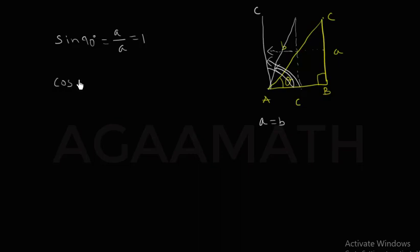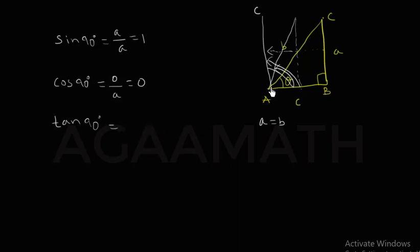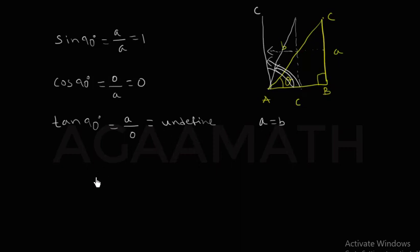So sin 90 degrees — opposite is A unit, which equals B (the hypotenuse), so A/A = 1. Cos 90 — adjacent by hypotenuse — as the angle increases, the adjacent gets reduced. So 0 divided by hypotenuse A equals 0. And tan 90 — opposite by adjacent — opposite becomes A unit and adjacent becomes 0, so tan 90 is undefined.